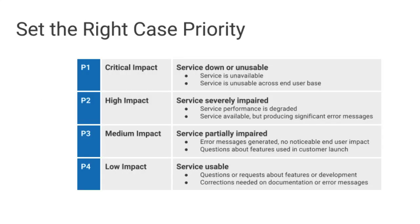When you file a case, support uses the priority field for initial routing, especially when an issue may page someone. Case priorities are also described in the case creation form itself. Use P1 for production emergencies — think of case priority in terms of the impact to your business. In addition to setting the priority field correctly, it's useful to add a sentence describing the impact in your words. For example, you may consider a problem with the dev version to be a P1 even if no end users are directly impacted, if it's blocking a critical security fix. To avoid incorrect assumptions, it's helpful to be explicit about why you selected P1.